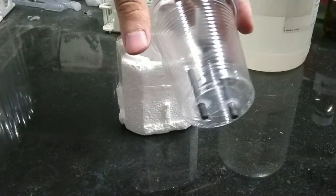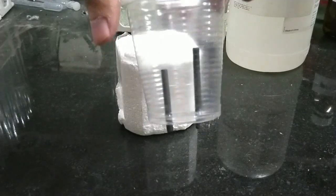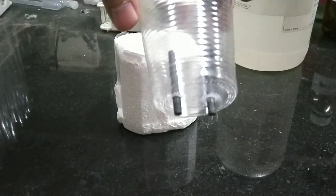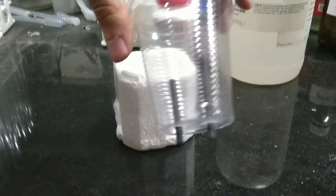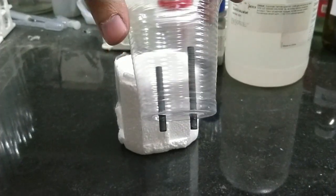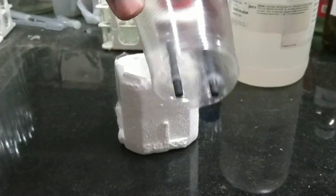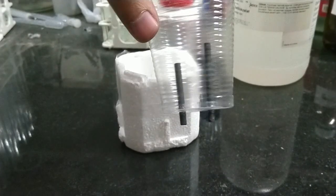Here I have made a simple electrolytic cell using two graphite electrodes I have obtained from AA batteries and a little plastic container.